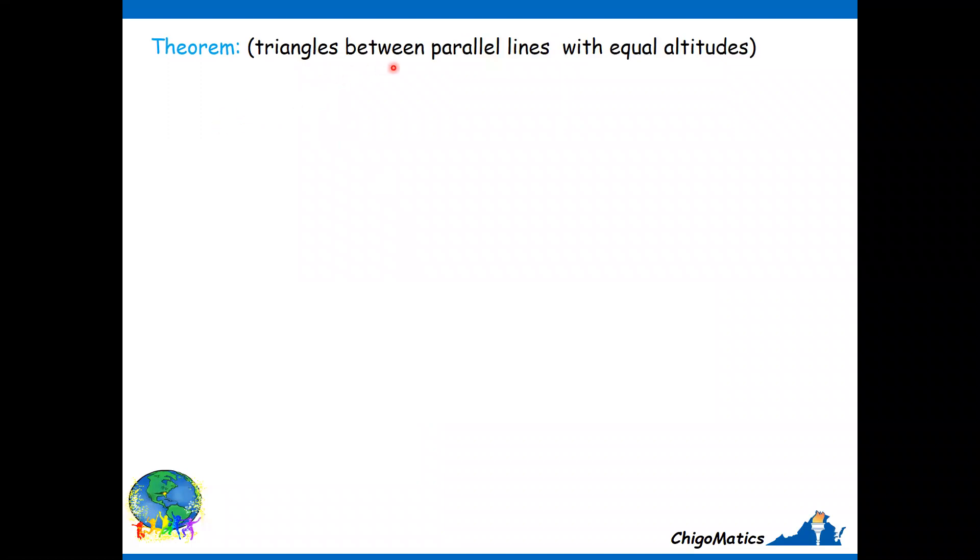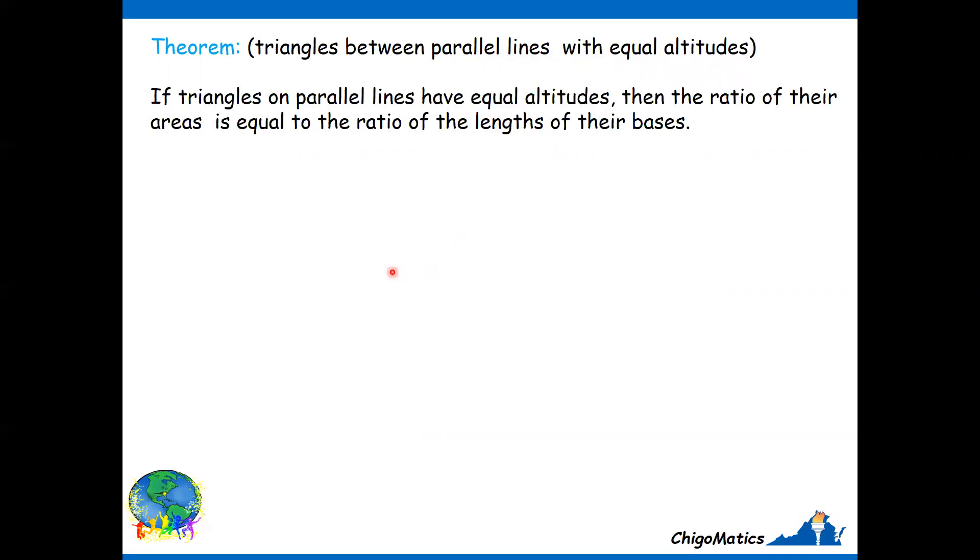The second situation: triangles between parallel lines with equal altitude, that is with the same height. It states that if triangles on parallel lines have equal altitude, then the ratio of their areas is equal to the ratio of the length of their bases.